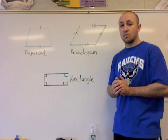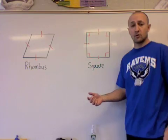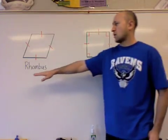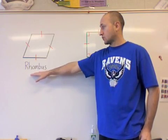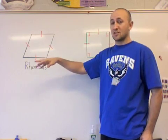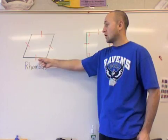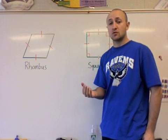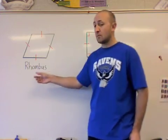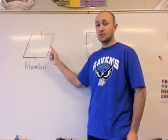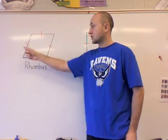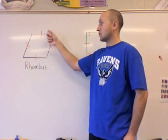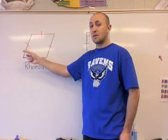Now let's look at some other quadrilaterals. The next ones are called a rhombus and a square. A rhombus is basically a parallelogram — so remember, it has two sets of parallel lines. What sets it apart and makes a rhombus special is that it has two sets of congruent lines. Congruent, from angles and triangles, means the same. So a rhombus is a parallelogram with two sets of lines that are equal lengths — the bottom is the same length as the top, and the left side is the same length as the right.